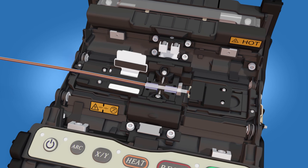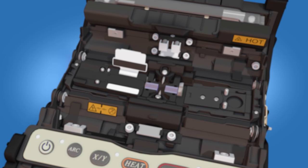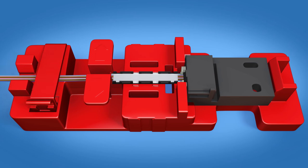Keeping tension on the splice, remove the fiber and connector holder from the splicer. Set them onto the assembly tool and close the hinge while keeping tension on the fiber.